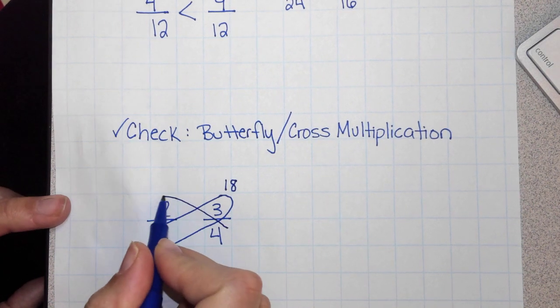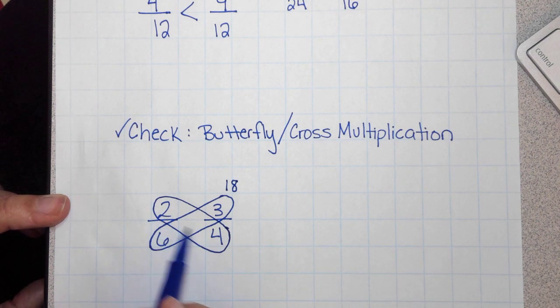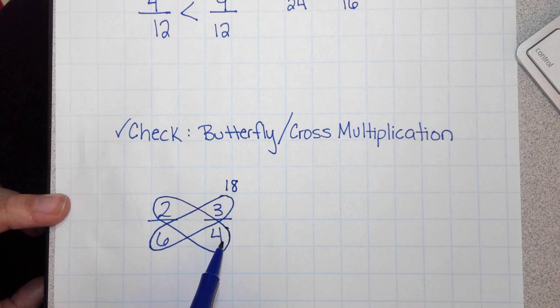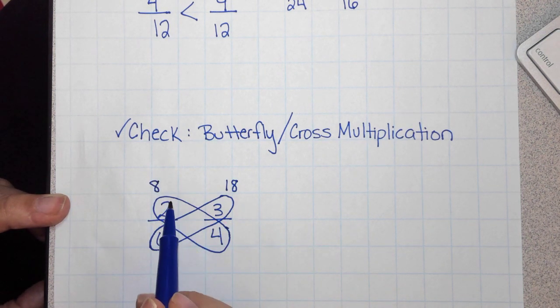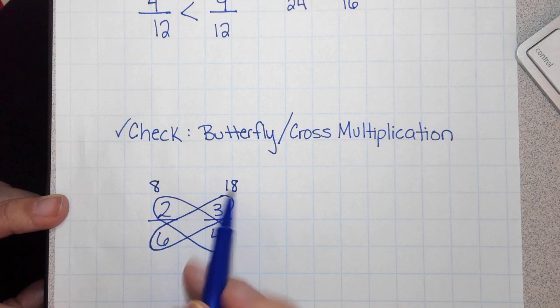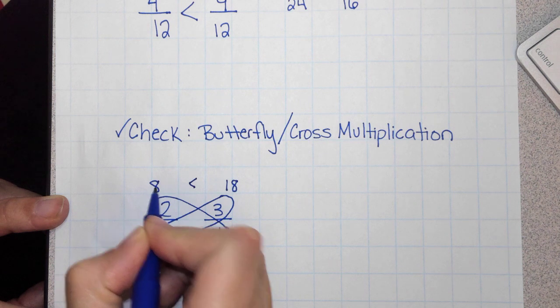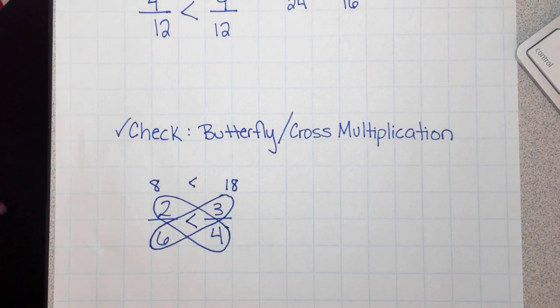Then I'm going to do the same thing with 2 and 4. So I'll take the numerator from this one and multiply it with the denominator from this one. 4 times 2 equals 8. So then I can look at the numbers on top and see which one is the greater number. 18 is greater than 8, which means 2 sixths is less than 3 fourths.